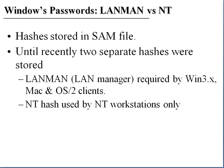Windows uses two different types of passwords for authentication: the LAN Manager password and the NT password. Under Windows, hashes for passwords are stored in the SAM file — the Security Access Manager file. Until recently, two separate hashes were stored: the LAN Manager hash, required by Win 3 clients, Mac, and OS/2 clients so they can communicate, and the NT hash, used by NT workstations only.